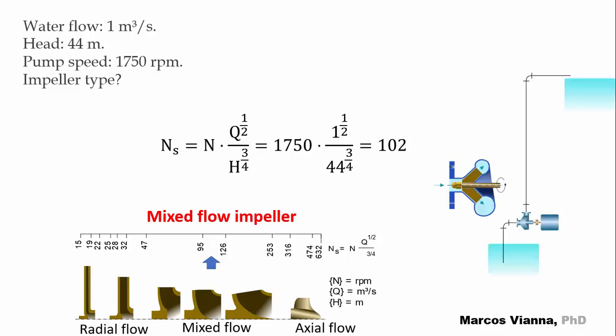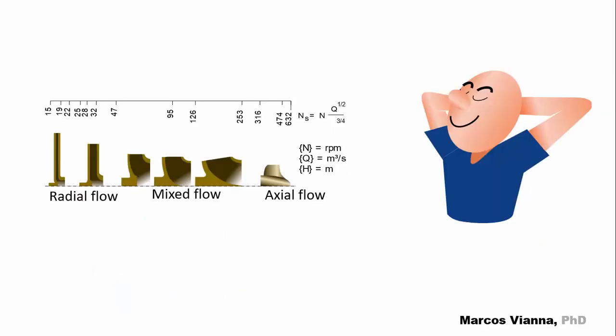This case is not very common in our practical applications, but it happens every once in a while. And so we remove the subjectivity of talking about relatively high and relatively low flows by using the specific speed formula. Just be aware of using the right units when you substitute the values of Q, H, and N.